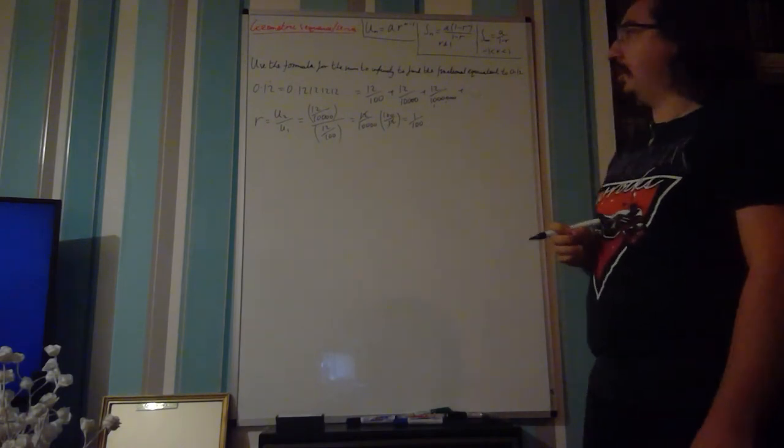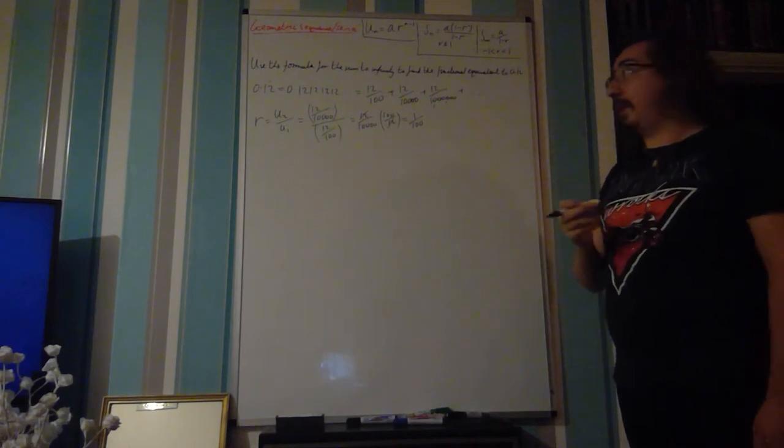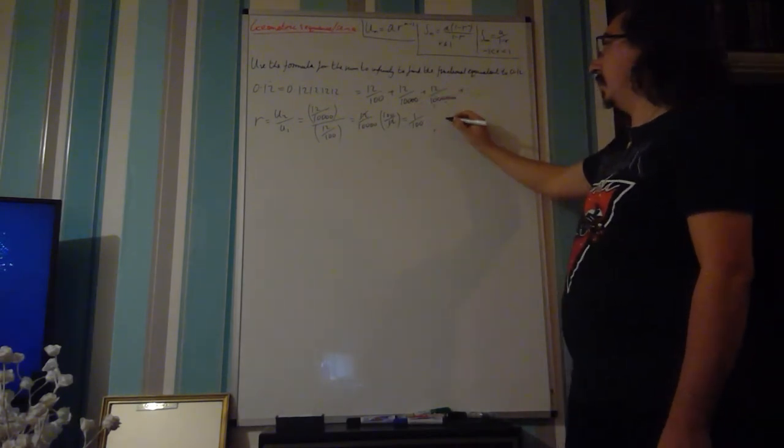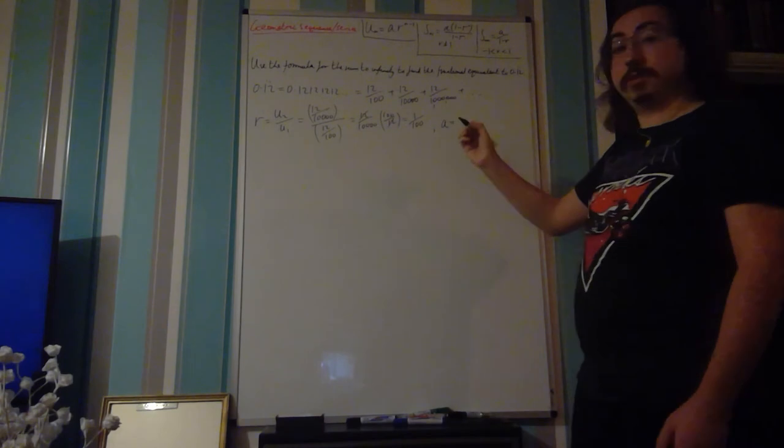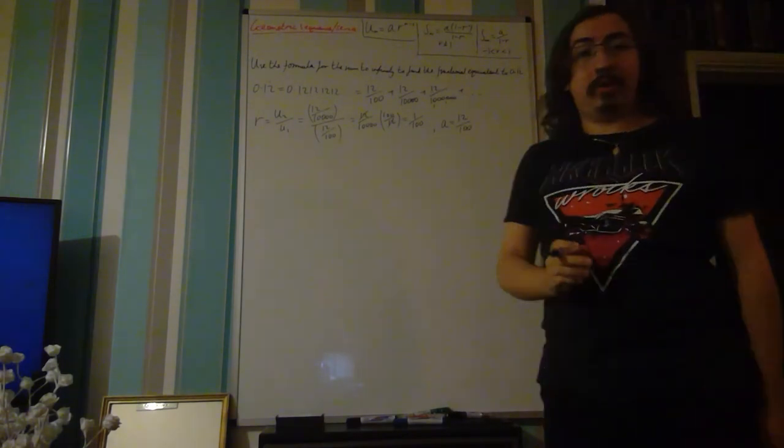So we have a value for r. In our sum to infinity formula we also need a value for a, which fortunately we've already listed. a represents the first term, so that is just 12 divided by 100.